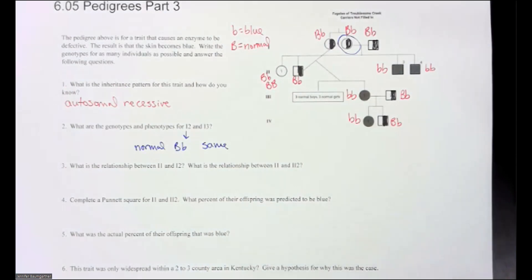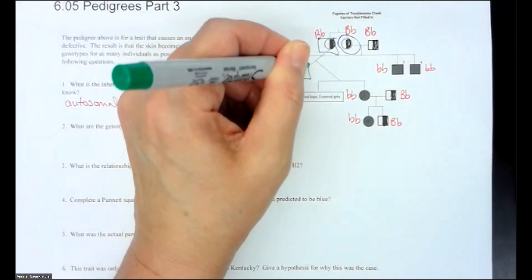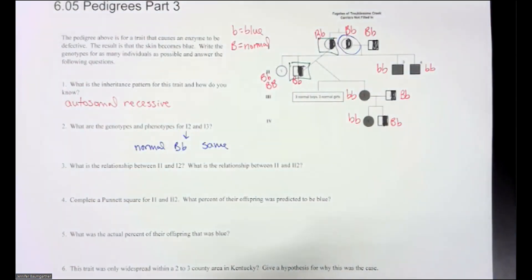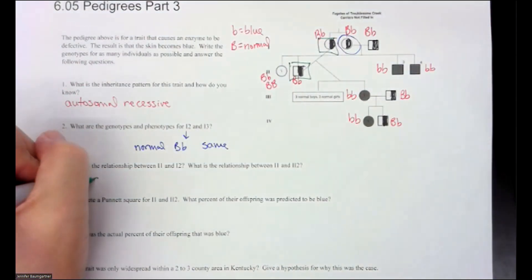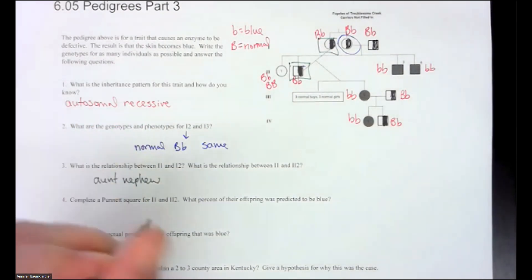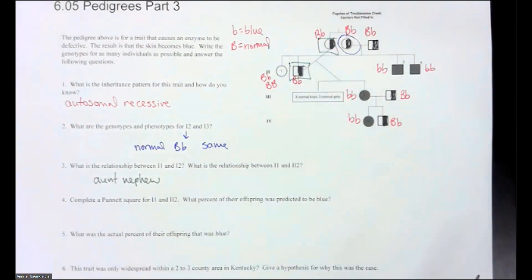1-2 and 1-3. What is the relationship between 1-1 and 1-2? So that would be here. Switch colors. Here and here. So what did we say that was? That was aunt and nephew. Yep, this is his aunt.